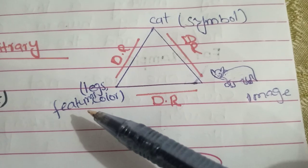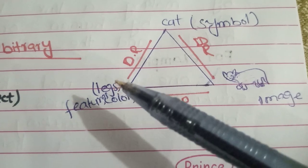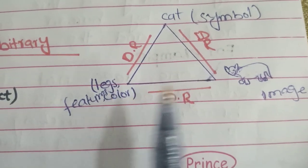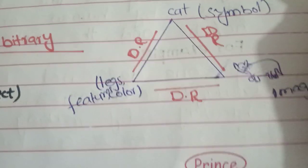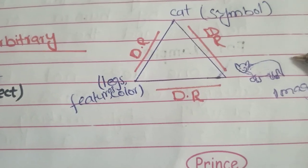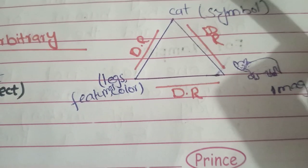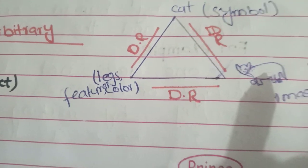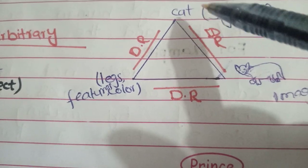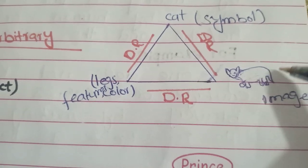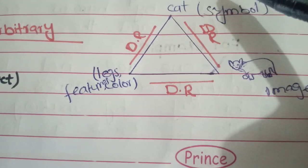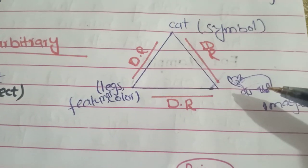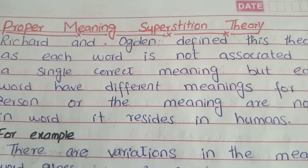The relation between the symbol 'cat' and our thoughts about the cat — its color, features, and sound — is a direct relationship. The relation between our thoughts and the image of the cat is also a direct relation. However, the relation between the symbol and the image is an indirect, arbitrary relation. The graphical representation of the word 'cat' has no natural one-to-one correspondence with the actual image of a cat; the word 'cat' does not show the features of a cat. So the relation between symbol and image is arbitrary.